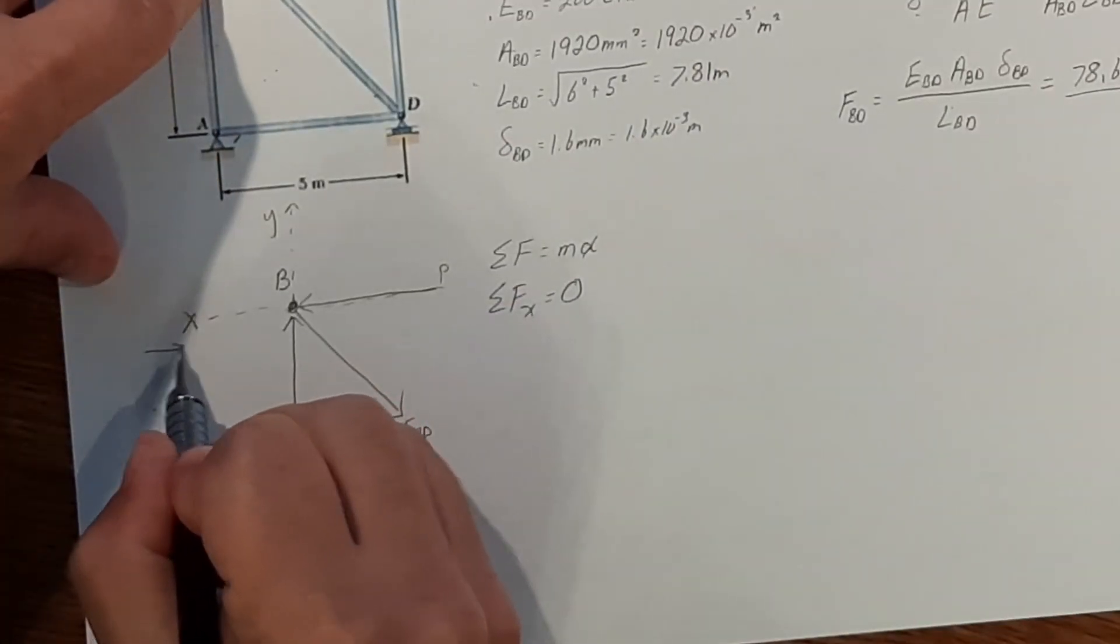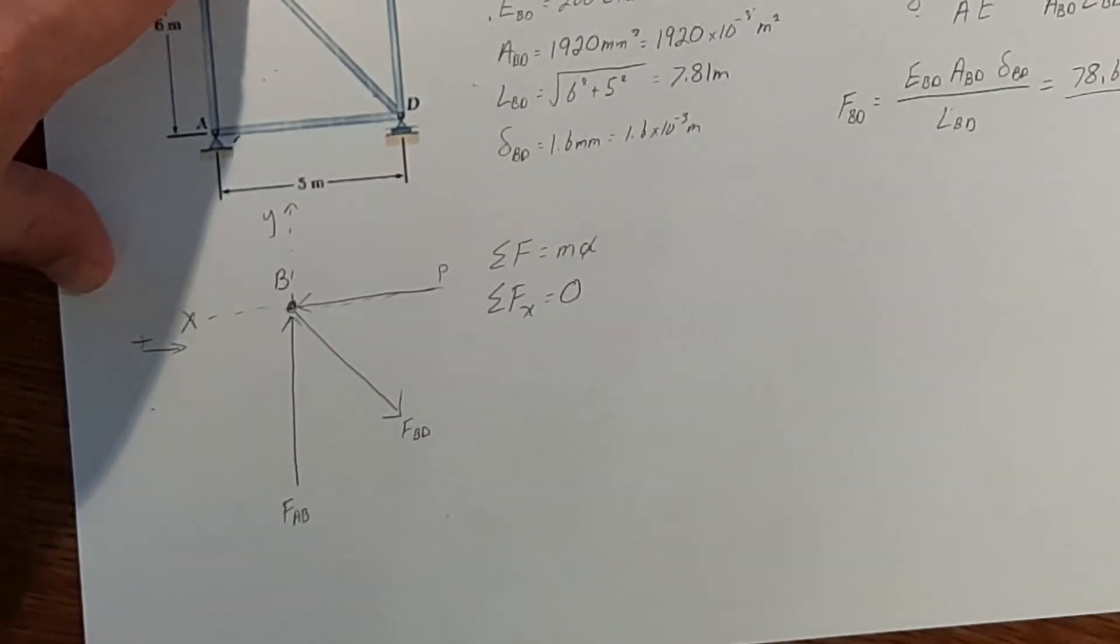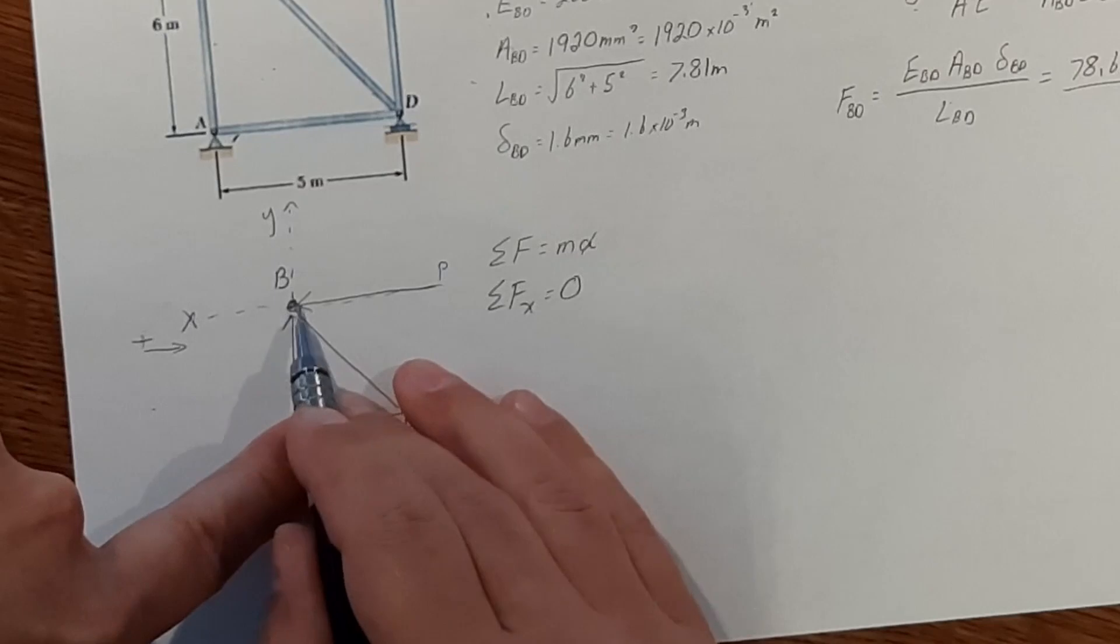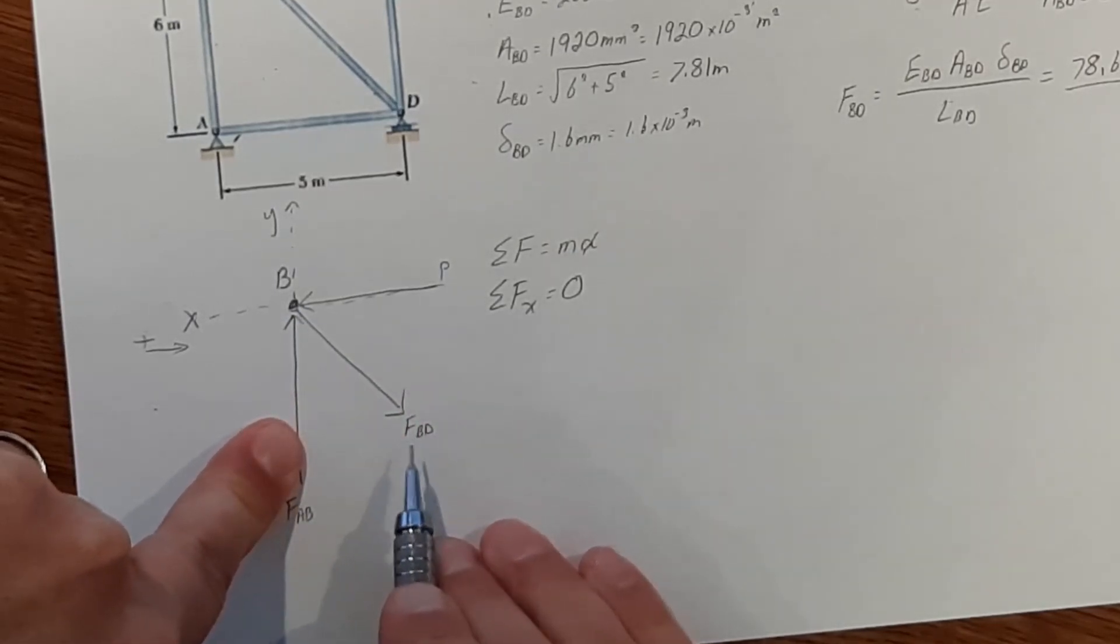Let's go and label to the right is positive. Anything that goes to the left is going to be negative. So we need to find the x portion of our force of BD.